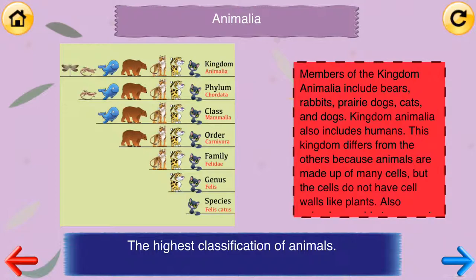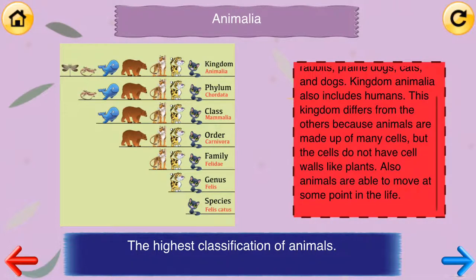Animalia: the highest classification of animals. Members of the kingdom Animalia include bears, rabbits, prairie dogs, cats, and dogs. Kingdom Animalia also includes humans. This kingdom differs from the others because animals are made up of many cells, but the cells do not have cell walls like plants. Also, animals are able to move at some point in their life.